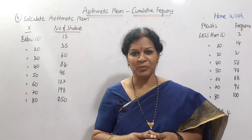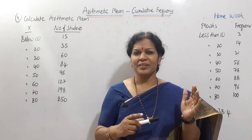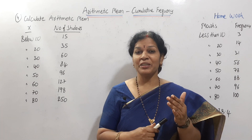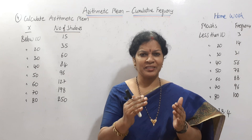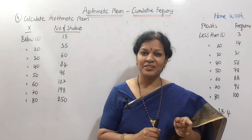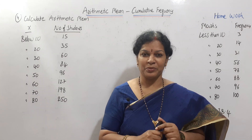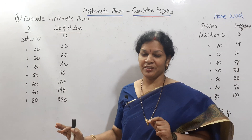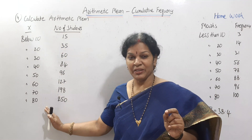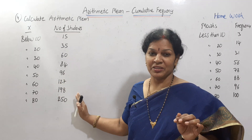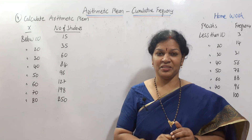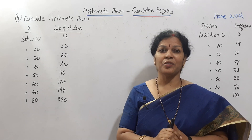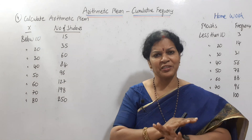Welcome to Devika's Commerce and Management Academy. Today we'll see arithmetic mean in the cumulative frequency method. In this method, the frequency is not given in disorder — it's given in ascending or descending order. Whenever class intervals are given as 'below 10', 'below 20', 'below 30', up to 'below 80', the frequency will always be in ascending order. We have to rearrange this into the normal way. If you focus for just four minutes, the rest of the problem is normal arithmetic mean.